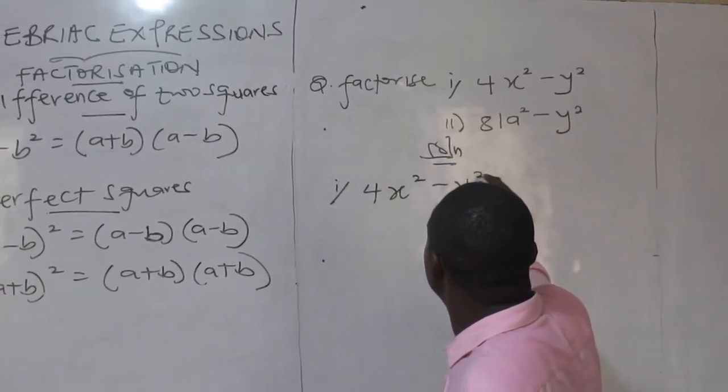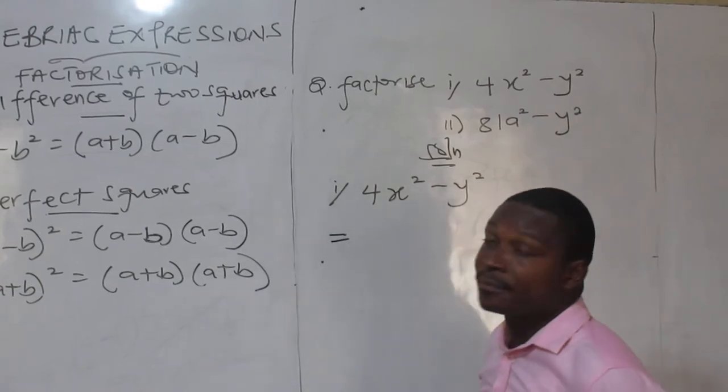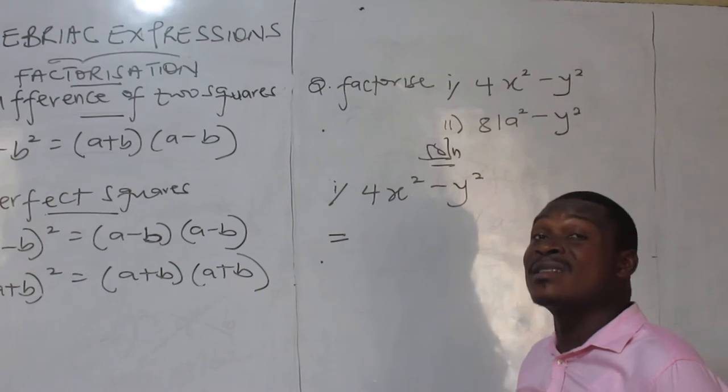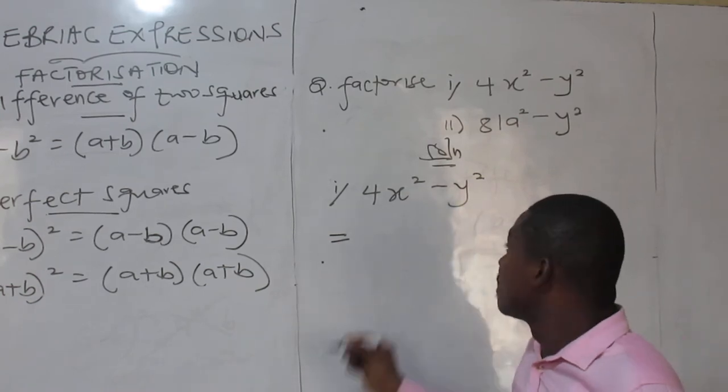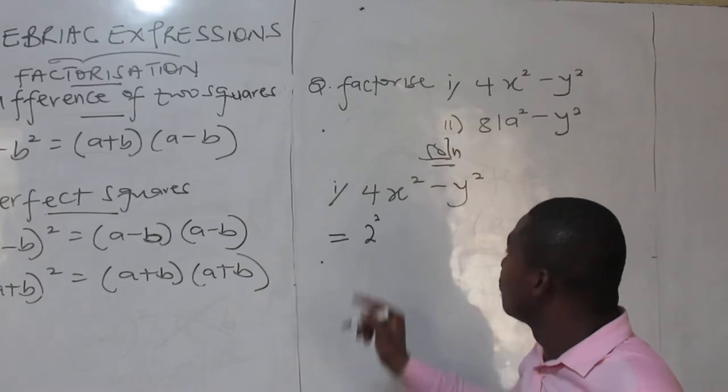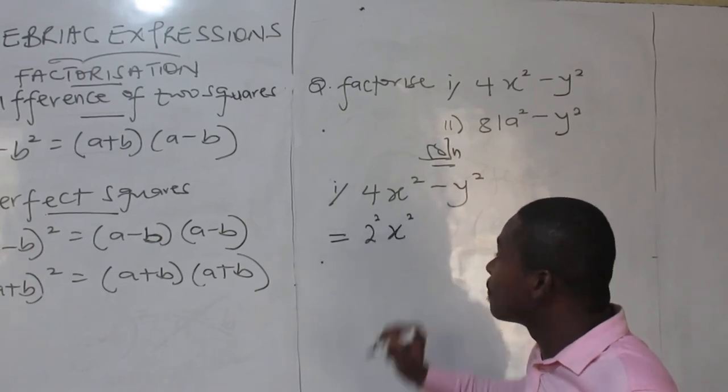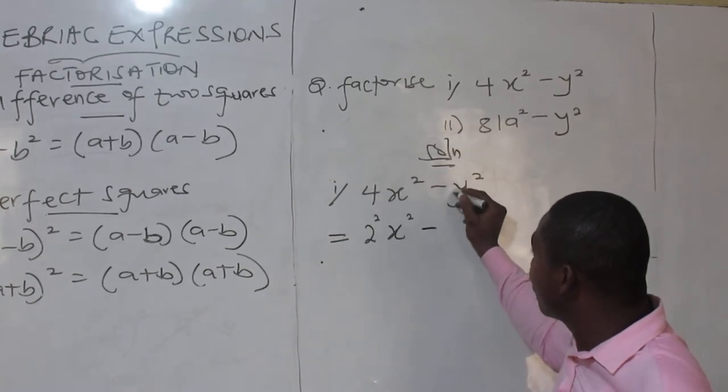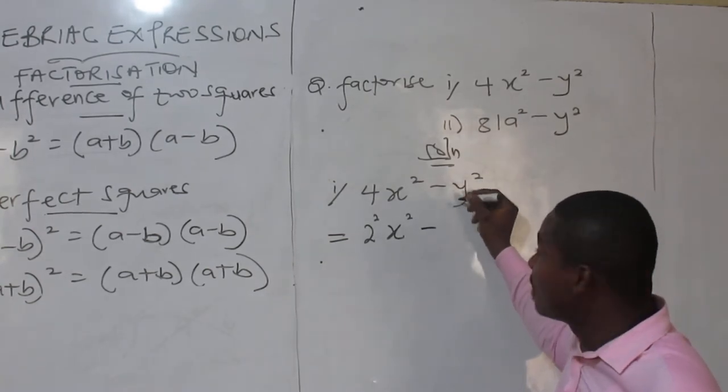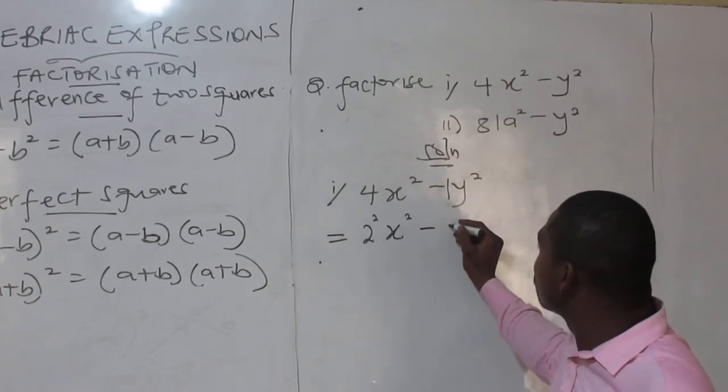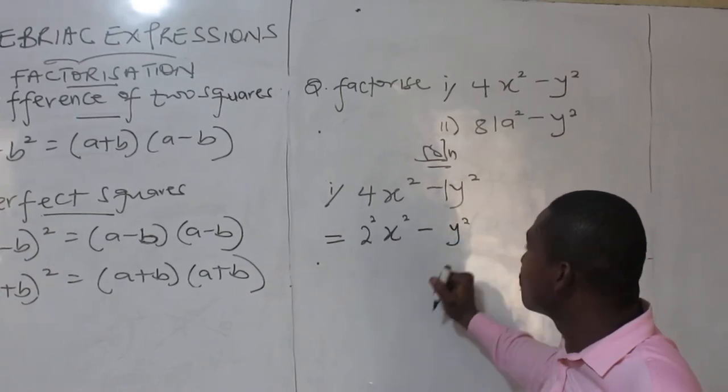4x squared minus y squared. Good. Now, some of them happens to be difference of two squares in disguise. It happens. So this 4 is 2 squared. Do you agree? Now, give me 4. Now, that is my x squared. And this happens to be y, so-called y, 1y, right? There's 1 here. 1y is the same as the coefficients here. The leading coefficient is 1. So 1y is the same as y squared, as you see.